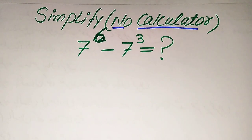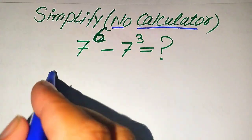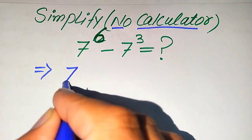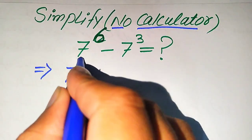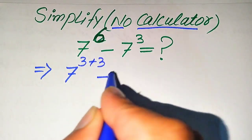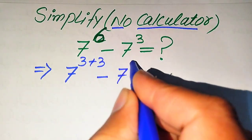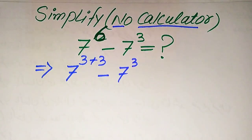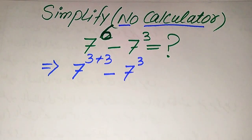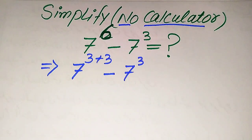The very first thing we are going to do is focus on the exponent of the first term. The exponent of the first term is 6, so we will just break this 6 in this form: this is 7 to the power of 3 plus 3, minus 7 cubed.